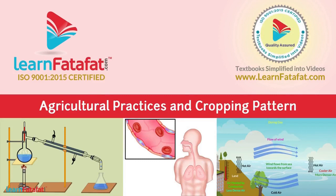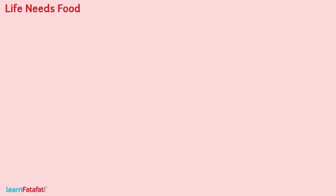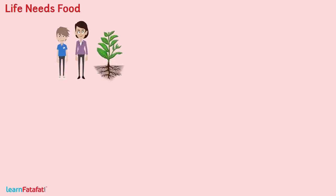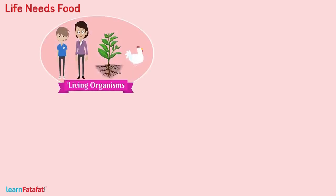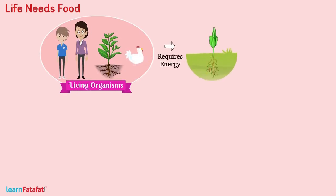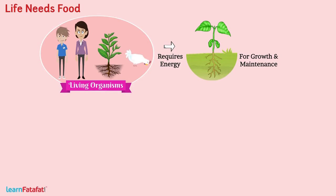Agricultural Practices and Cropping Pattern. Dear students, you, me, plants, animals — all are living organisms. All living organisms require energy to carry out various body processes such as growth and maintenance. This energy is obtained from food.